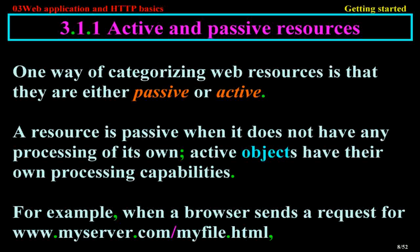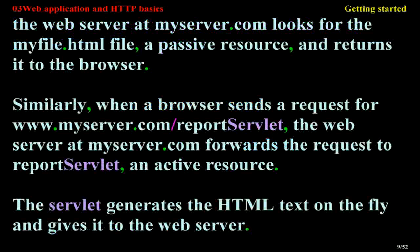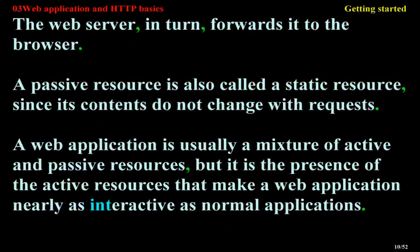One way of categorizing web resources is that they are either passive or active. A resource is passive when it does not have any processing of its own, while active objects have their own processing capabilities. For example, when the browser sends a request for a static HTML file, the web server looks for that file — a passive resource — and returns it to the browser. When the browser requests a ReportServlet, the web server forwards the request to the servlet — an active resource — which generates the HTML text on the fly and gives it to the web server, which in turn forwards it to the browser. A passive resource is also called a static resource, since its contents do not change with requests.